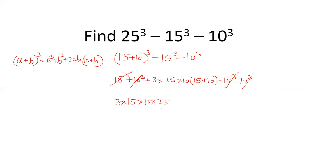15 into 25 is 375. Then 375 into 3 is 1125, and 1125 into 10 gives us the answer 11,250.